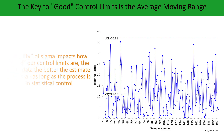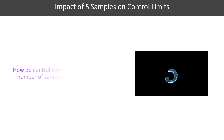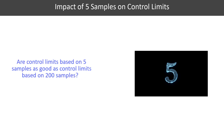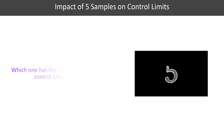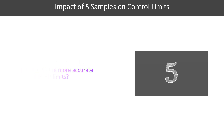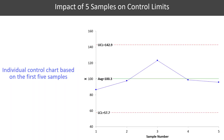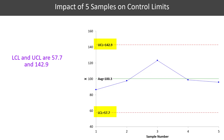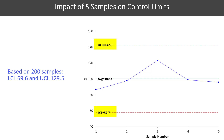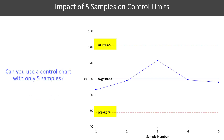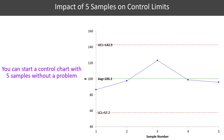The quality of sigma impacts how good our control limits are — the more data you have, the better. Suppose the control limits are based on 5 instead of 200 samples. Are those control limits as good? Looking at the individuals control chart based on the first 5 samples, the upper and lower control limits are 142.9 and 57.7. Based on 200 samples they were 129.5 and 69.6 — so 5 samples give a much wider control limit. Can you use a control chart with only 5 samples? Yes, you can. You start with 5 and simply recalculate the control limits each time until the limits aren't going to change much more with sample size.